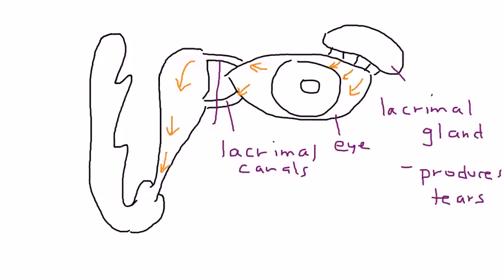And then the tears then flow down through this area. This top area is known as the lacrimal sac. And finally we get to this part, which is known as the nasolacrimal duct.